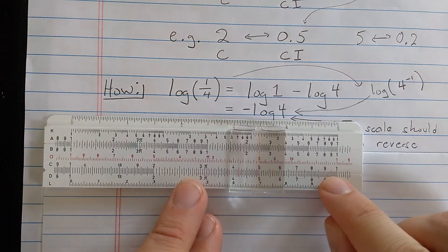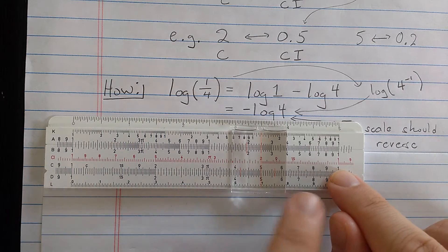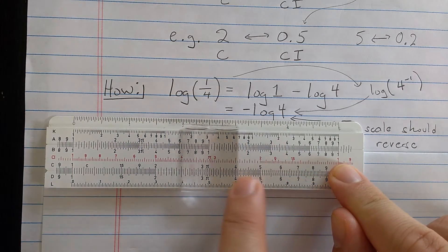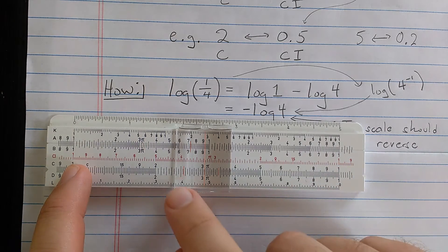You see actually that the CI scale is exactly a reversed C scale. So you see here, the distances are greater on the right. And the distance from 1 to 2 here is the same as the distance from 1 to 2 here on the C scale.